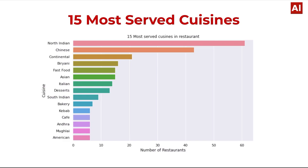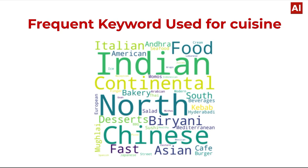The 15 most popular cuisines: the x-axis represents the number of restaurants and the y-axis represents cuisines. More than 60 restaurants provide North Indian food; Chinese is second most popular, Continental is third, followed by biryani, fast food, Asian, Italian, and American. Frequent keywords used for cuisines include Italian, Andhra food, American, Indian, Continental, biryani, and Chinese.